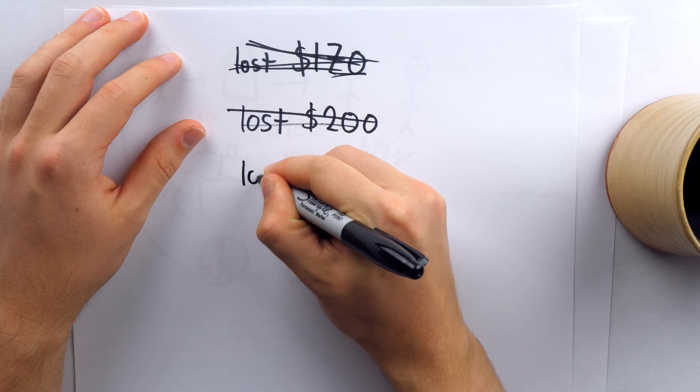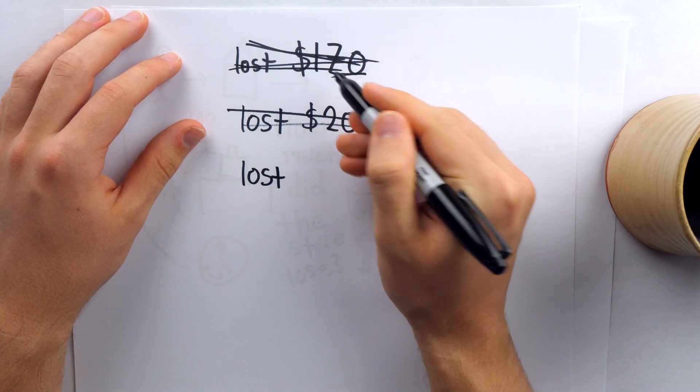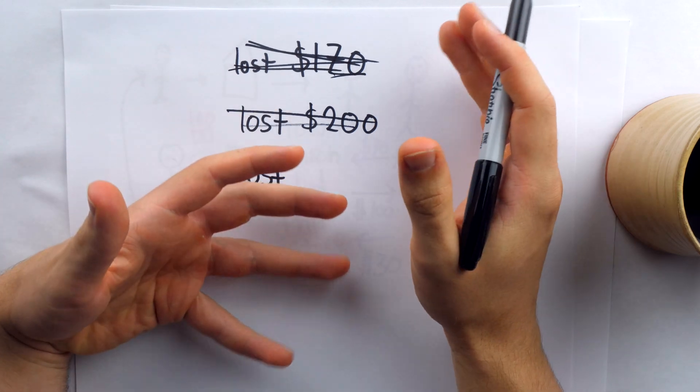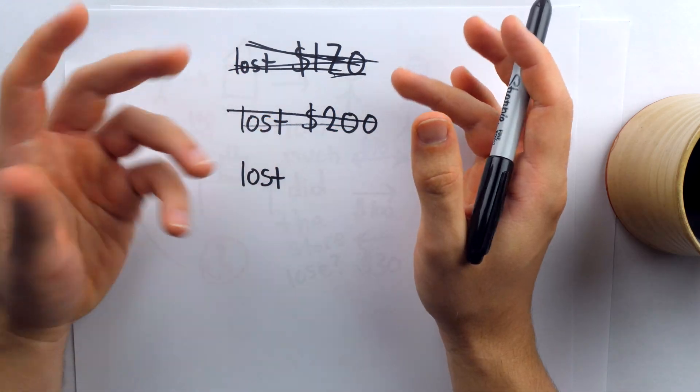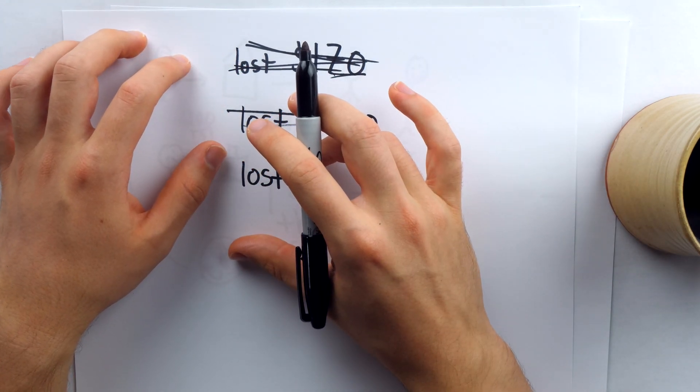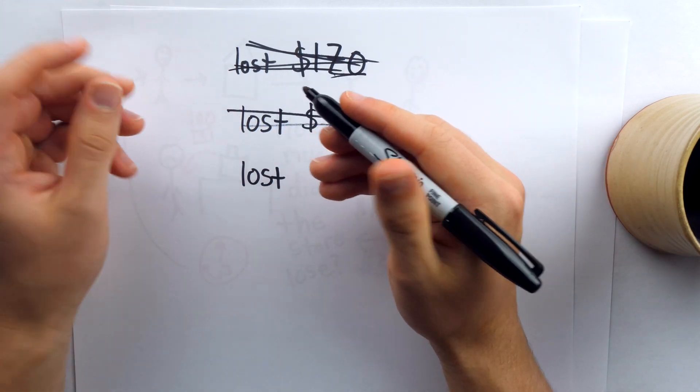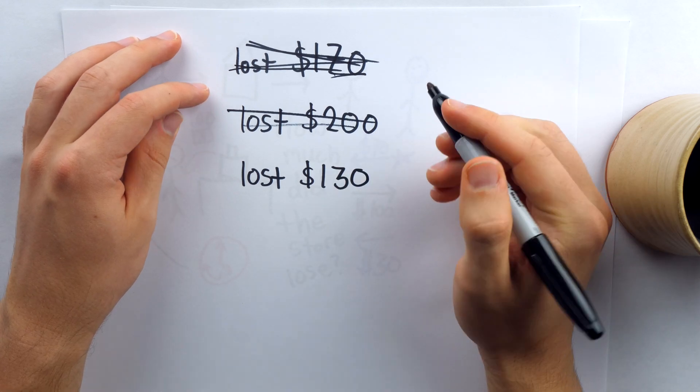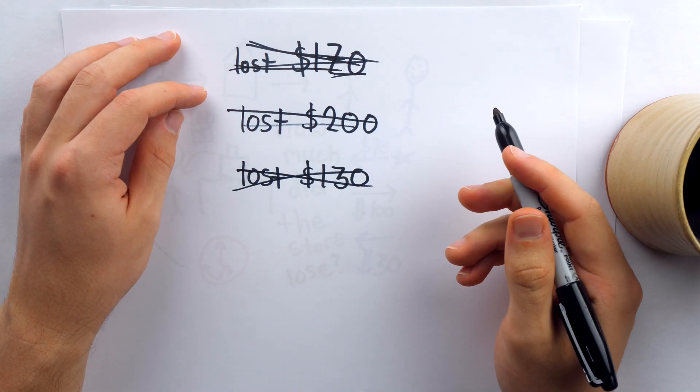Another answer could be the store did hang on to $70 from the man's $100, which were given to them for the goods. So what they lost were the original $100 that was stolen, plus the $30 that they gave back in change, in which case they lost $130. This too is incorrect.